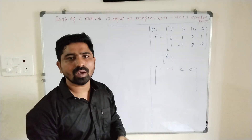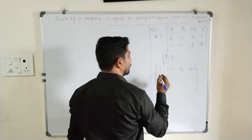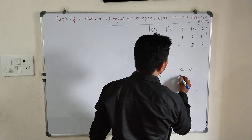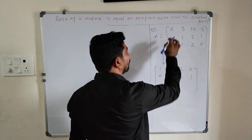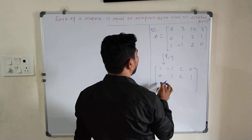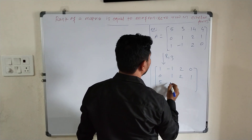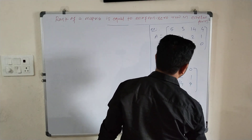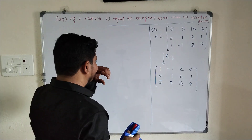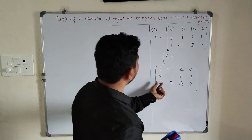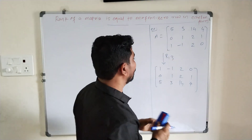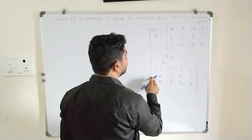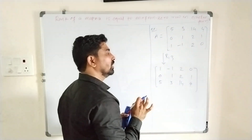When swapping row R1 and R3, row R2 remains the same: 0, 1, 2, 1. And row R3 becomes: 5, 3, 14, 4. This new matrix is equivalent to matrix A — let's call it matrix B.